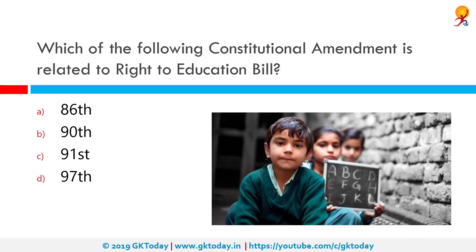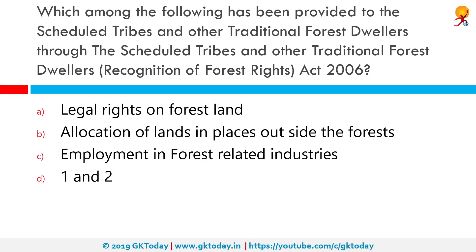Which constitutional amendment is related to the Right to Education? Correct answer is the 86th Amendment. It states the state shall provide free and compulsory education to all children of the age of 6 to 14 years in such manner as the state may by law determine. The state shall endeavor to provide early childhood care and education for all children until they complete the age of 6.